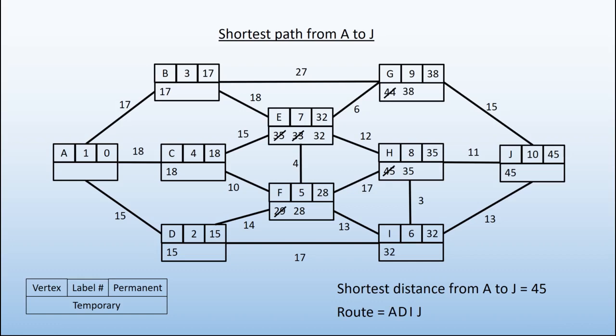You might notice that I built up the route backwards. I started at the end and worked through to the starting vertex. And I wrote them in the order as I was doing them, so that now I can read the route A, D, I, J to get me from A to J.